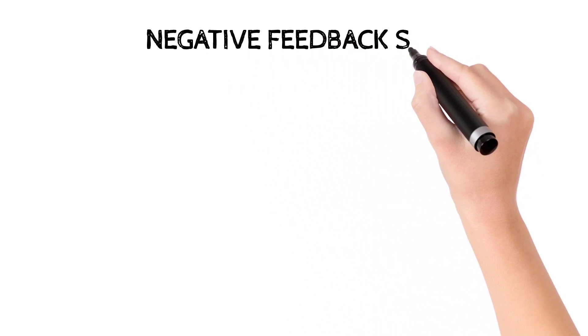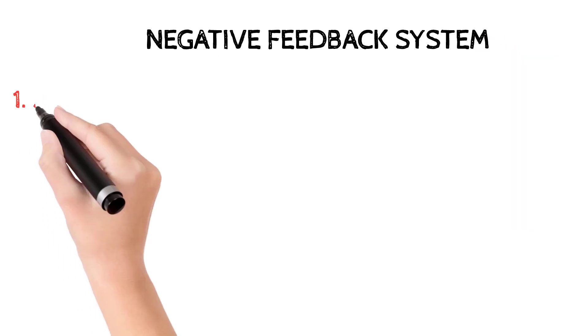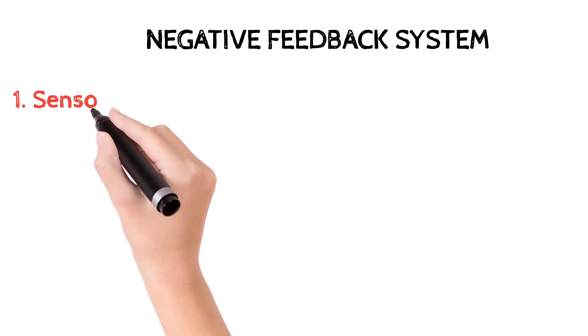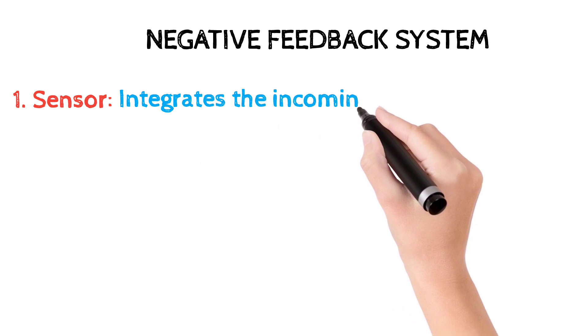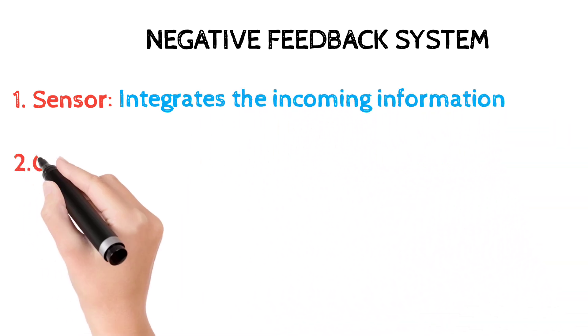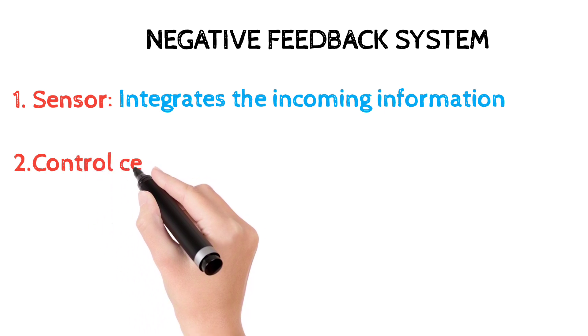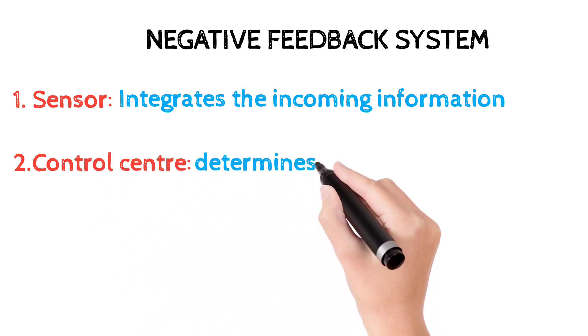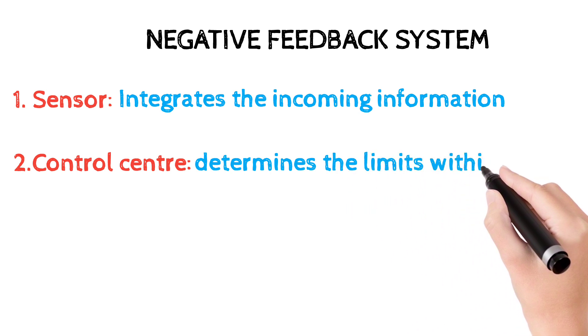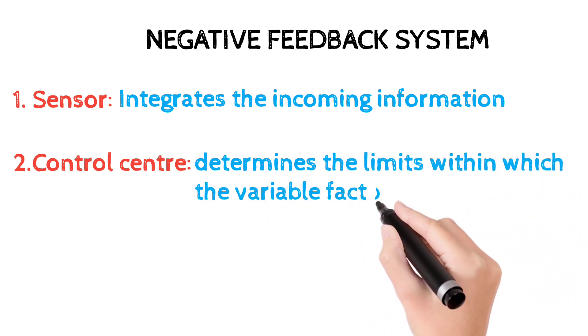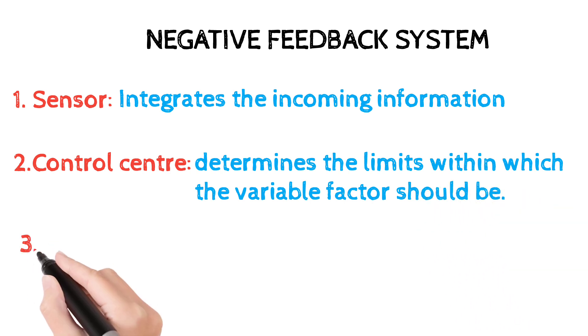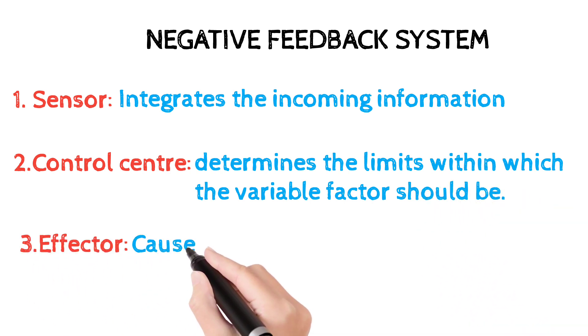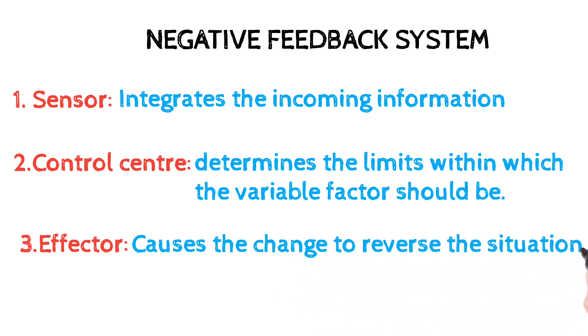Major roles in the negative feedback system: the sensor integrates the incoming information, the control center determines the limits within which the variable factor should be, and the effector causes the change to reverse the situation and return to the normal range. That is all about unit 1 introduction.